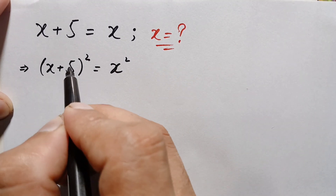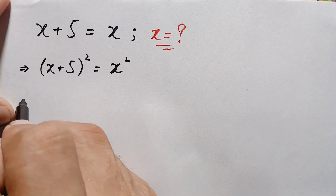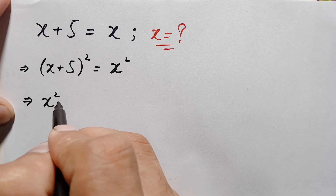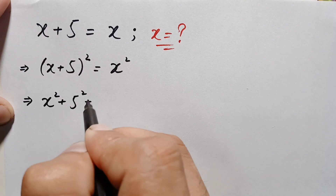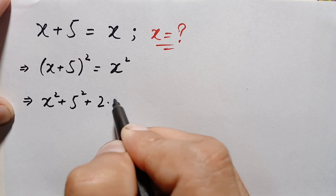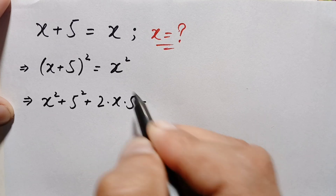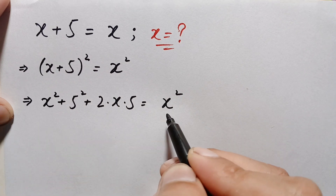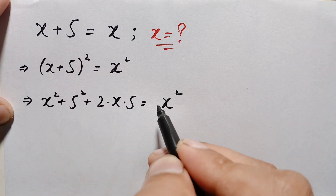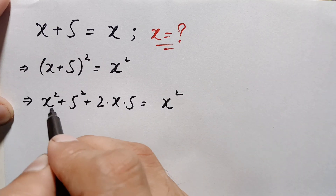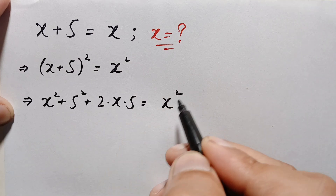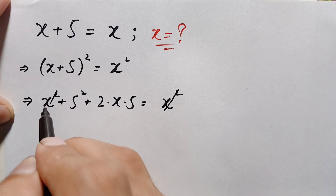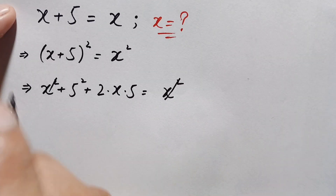On the left-hand side we use the identity a plus b whole square, which equals a squared plus b squared plus 2ab. Applying this identity, the left-hand side becomes x squared plus 5 squared plus 2 times x times 5, which equals x squared. Since x squared appears on both sides, we can cancel them directly.